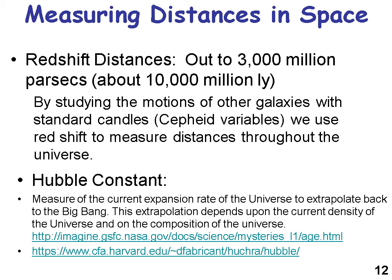The Hubble constant is useful because it's used in measuring the current expansion rate of the universe to extrapolate back to the Big Bang — or when God first created the universe, space, and time. A diagram shows the history of the universe from creation to where we are today and how it expanded from that initial Big Bang. This extrapolation depends on the current density and composition of the universe.